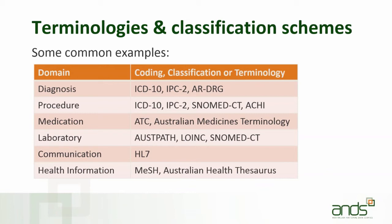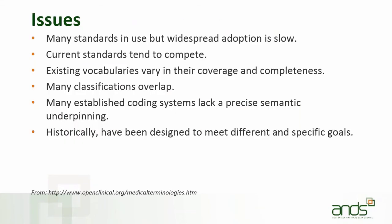These are some of the most common ones in use in Australia. Their use helps to promote consistency in reporting and interpretation of collected medical and health data. Their use incorporates patient care, health services billing, public health statistics, indexing and cataloguing of biomedical literature, and basic clinical and health services research. Many standards are in use, but widespread adoption has been slow.